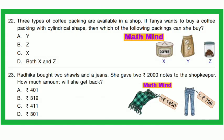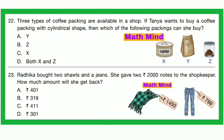Question No. 22: Three types of coffee packings are available. Tanya wants to buy a packing with a cylindrical shape. Which packing can she buy? X and Z are both cylindrical shapes. So Option D is correct — both X and Z.